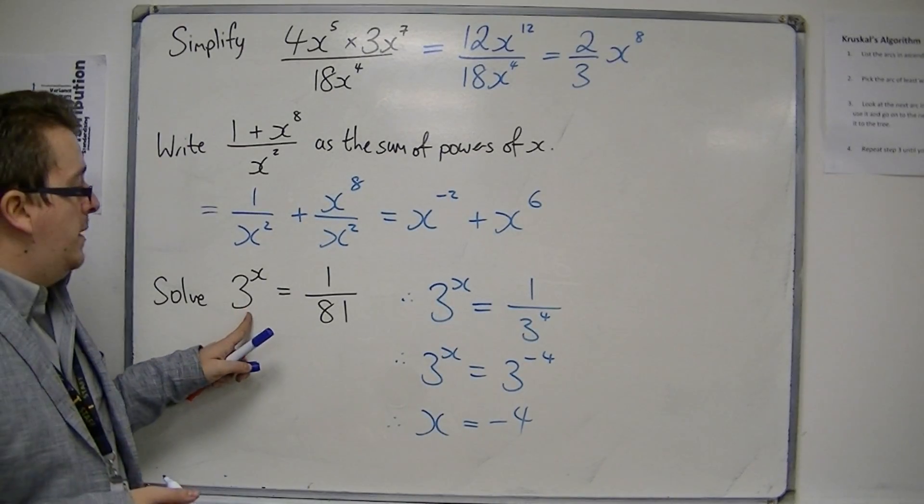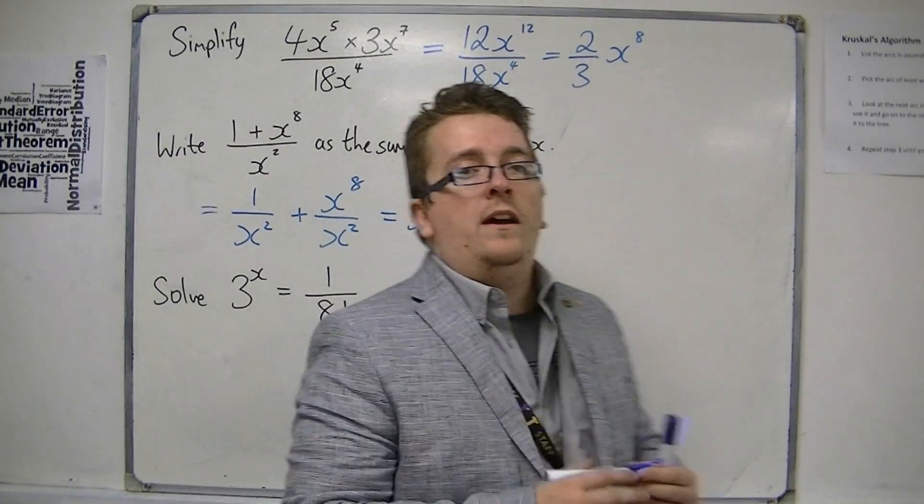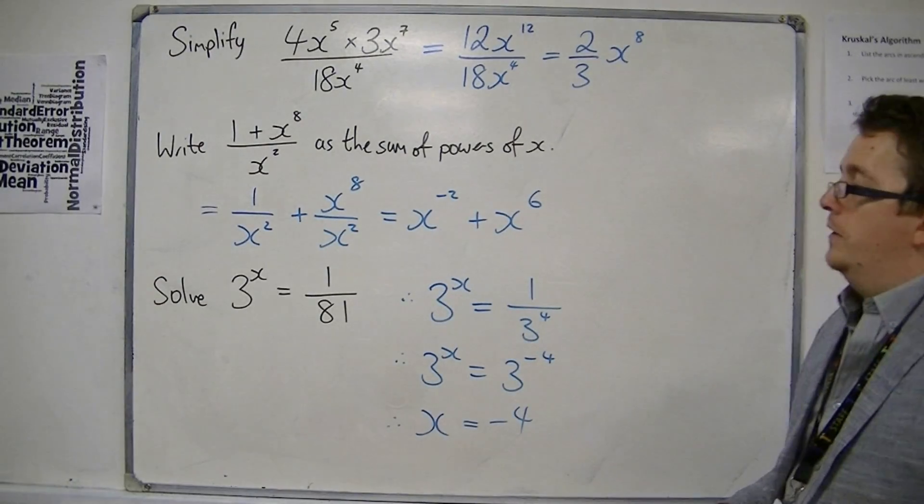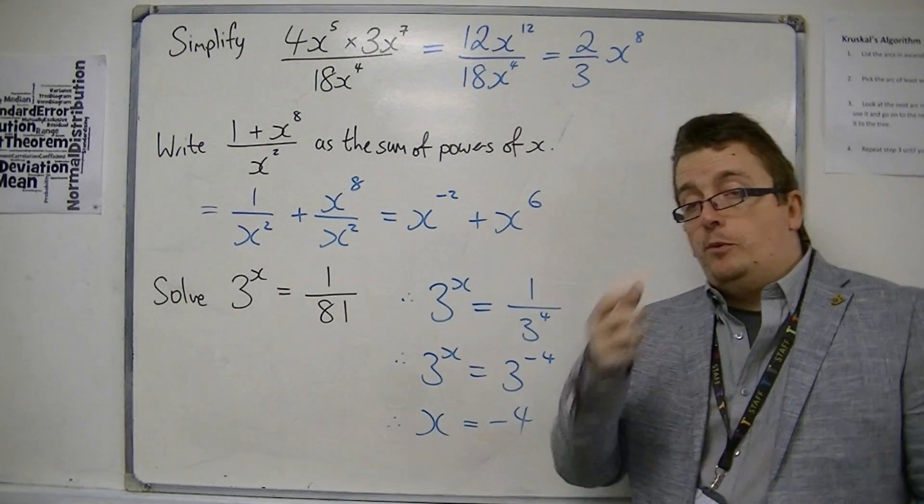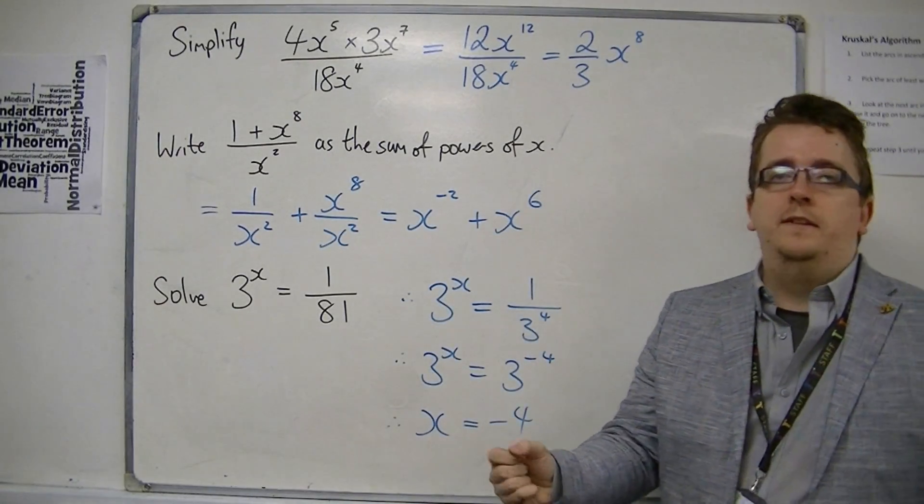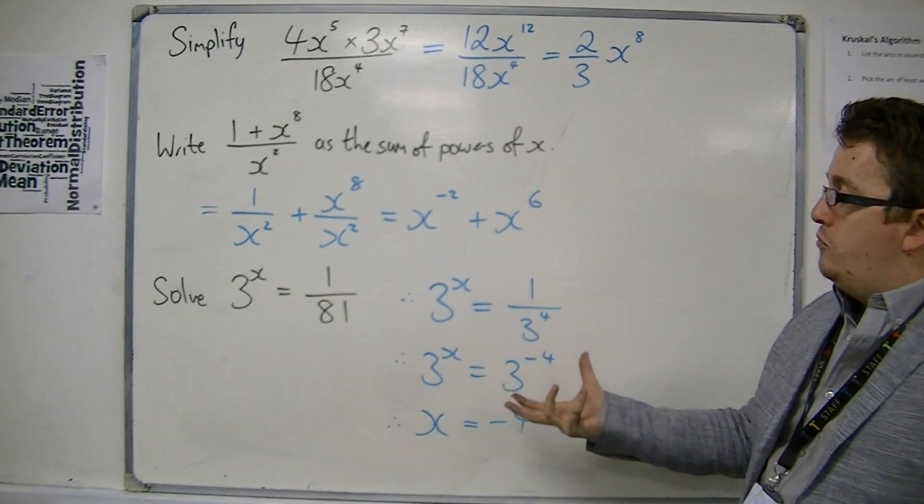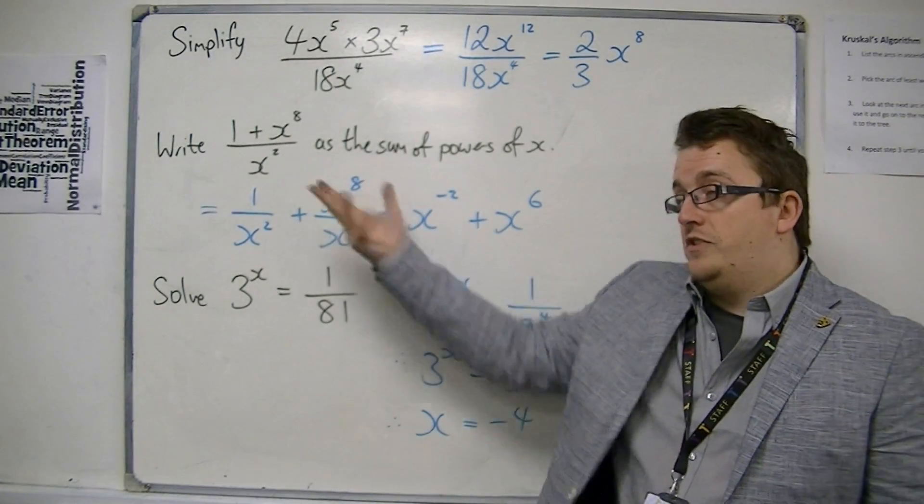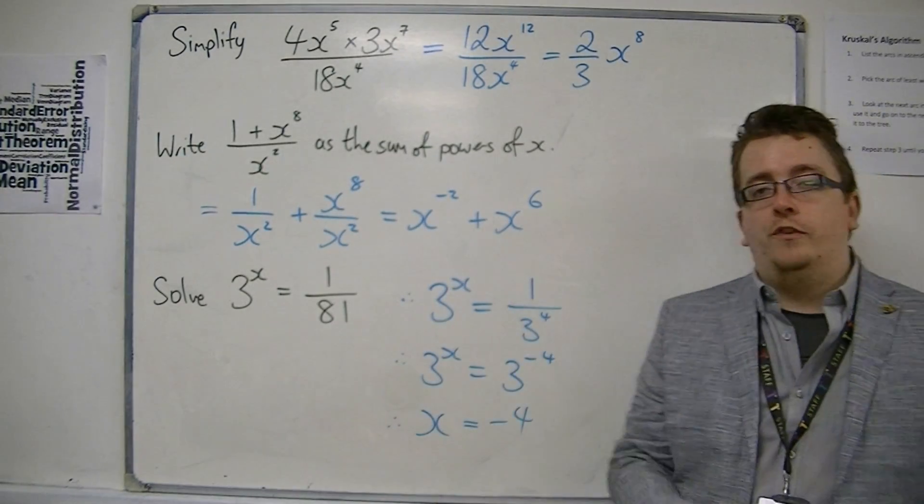So if you try and plug 3 to the minus 4 into your calculator, you should get 1 over 81. And these are a few more examples of how we can use indices to express expressions in different forms and solve equations.